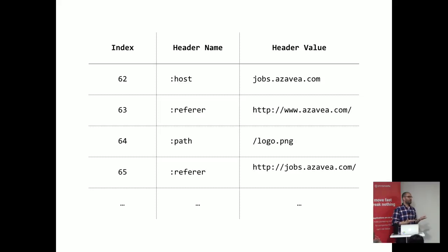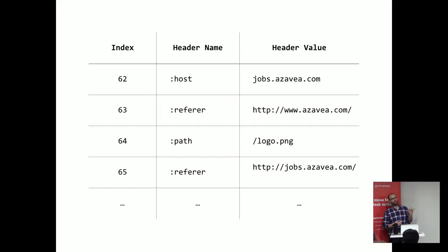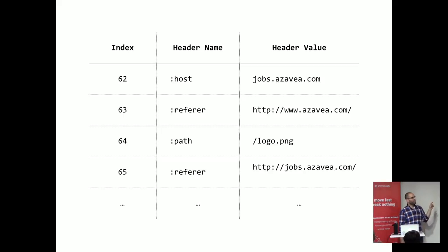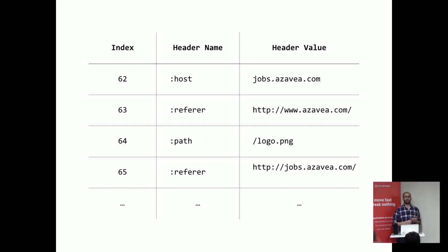One interesting thing: if you set up Nginx with HTTP/2 and compile it with debug support — if you use the Docker container, they've compiled it with debug support and produced a binary called nginx-debug. If you change the entry point to the container to nginx-debug, it turns on all levels of debugging. If you set up HTTP/2-enabled Nginx and watch the logs, you can see it maintaining a dynamic table, see references to these integers being used in what's going back and forth. You can see a lot of this play out if you enable debugging support and watch the logs.